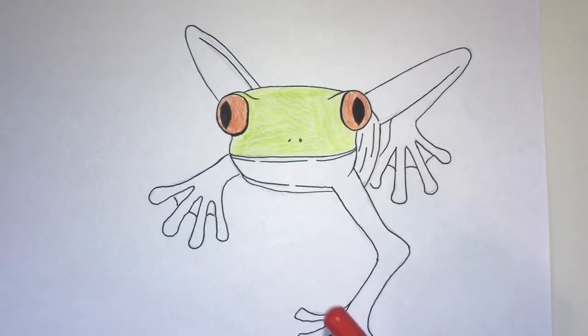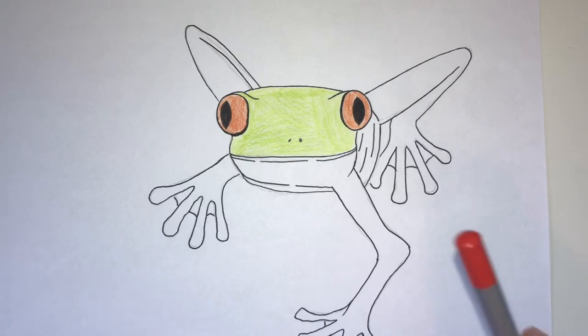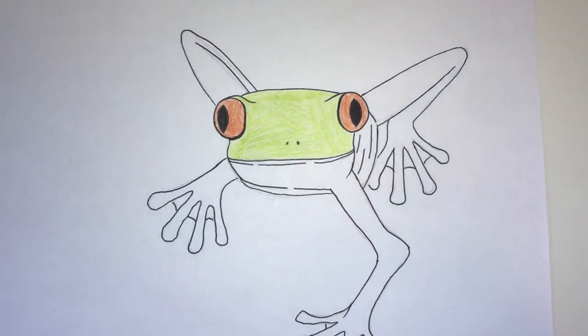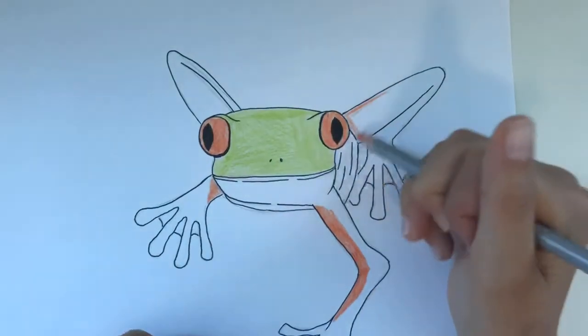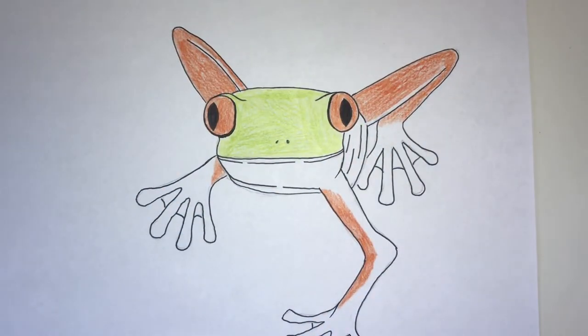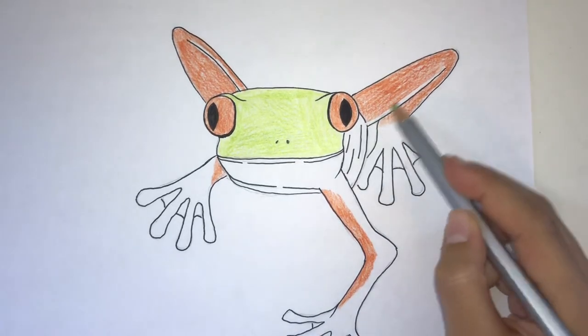And keep the red colored pencil because we need to color the legs, let me show you how to do that now. That's starting to look good now isn't it, now please take your green colored pencil and we'll start filling in the little gaps.